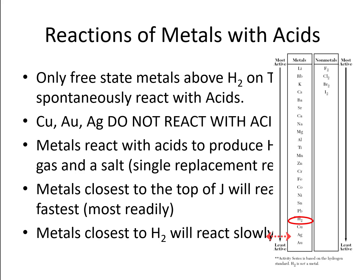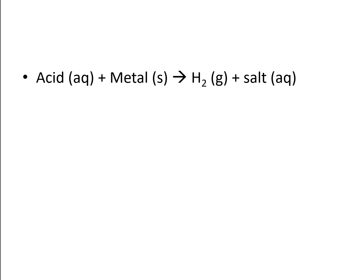So our generalized equation for the reaction of an acid with a metal is our aqueous acid reacting with our solid metal will give us hydrogen gas and an aqueous salt, which means the salt will remain in solution. It generally will be something that is a soluble salt.